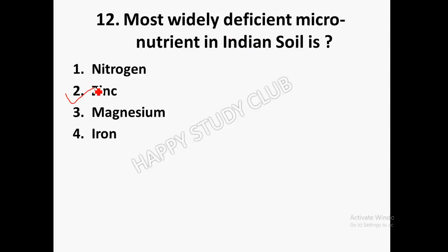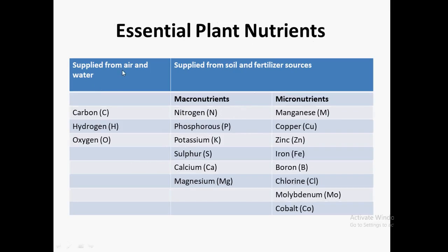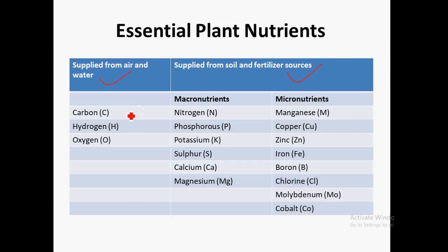The most widely deficient micronutrient in Indian soil is zinc. Plant nutrients are supplied either from air and water, or from soil and fertilizer sources. When supplied from air and water, they come in the form of carbon, hydrogen, and oxygen.